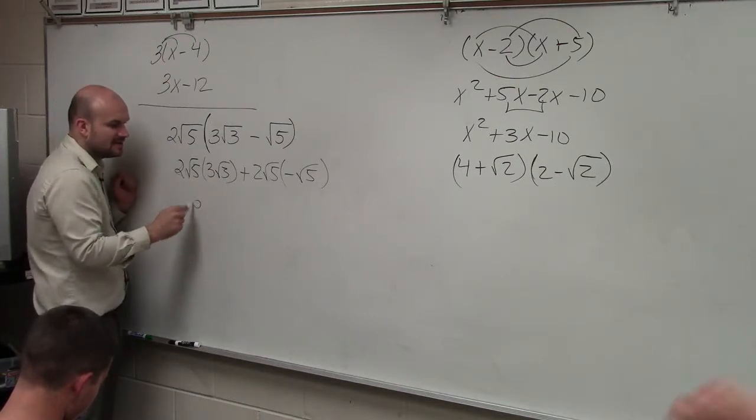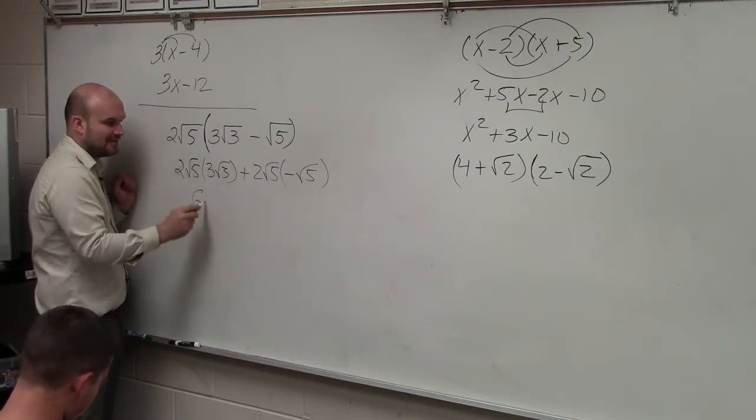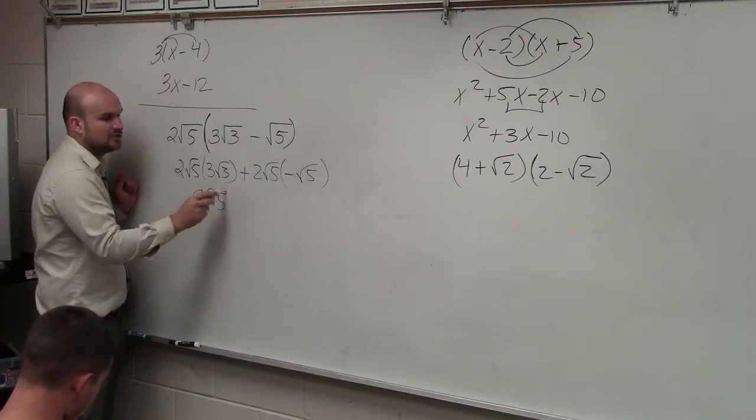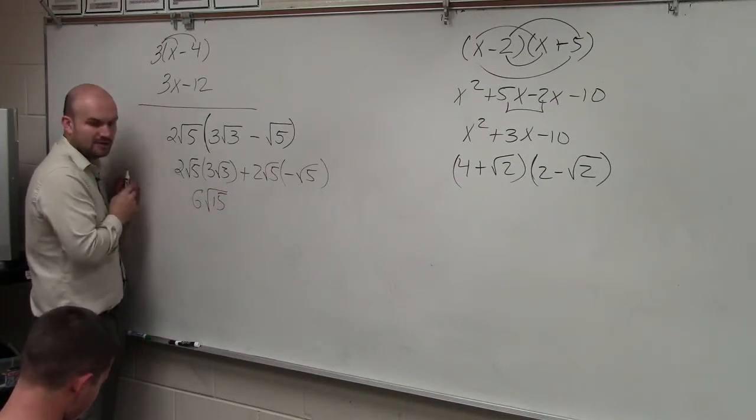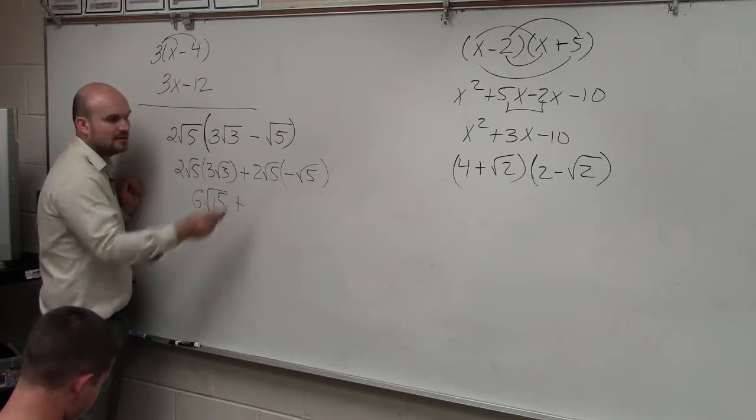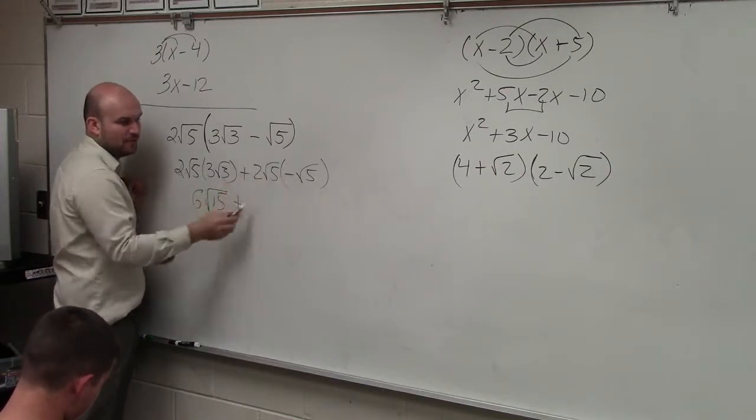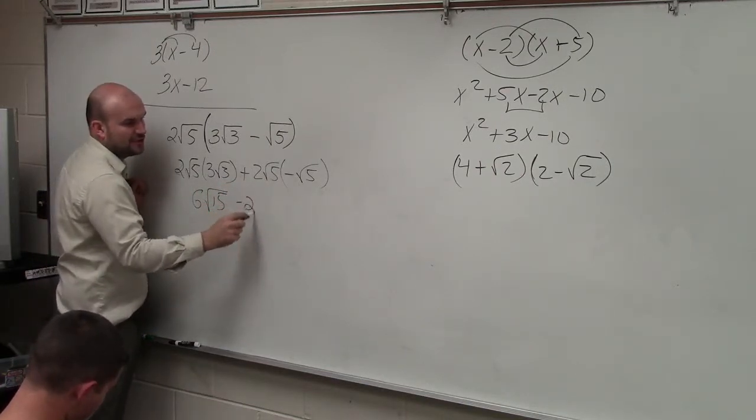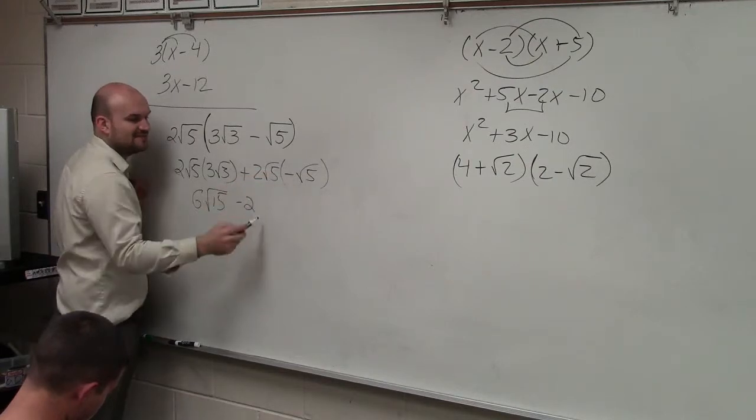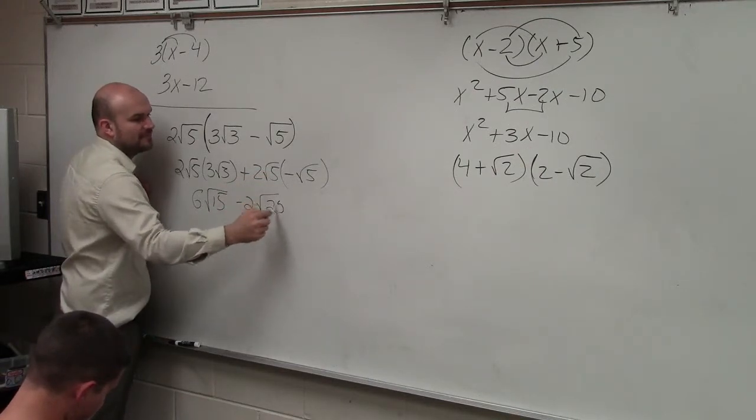2 times 3 is 6. 5 times 3 is 15. But those are under the radical, and so they remain under the radical. Plus, 2 times negative 1, so that now becomes a negative 2. And 5 times 5 is the square root of 25. Now,